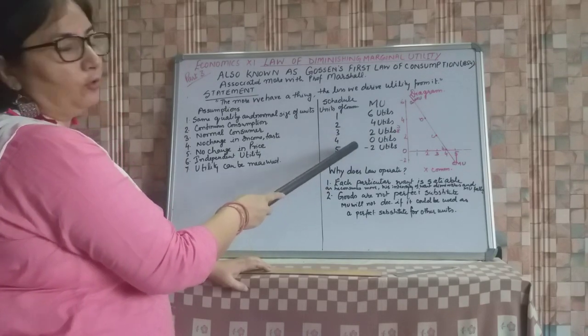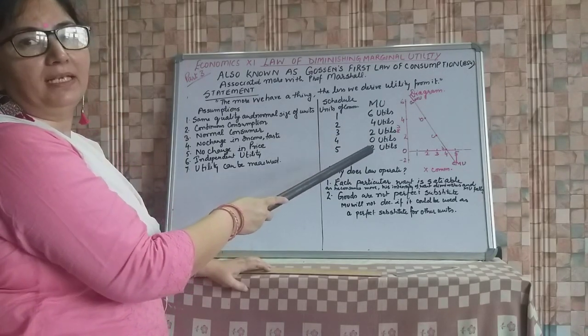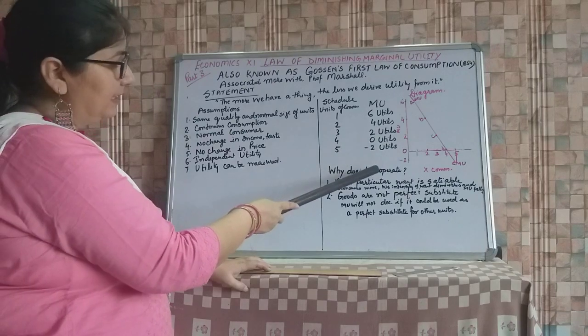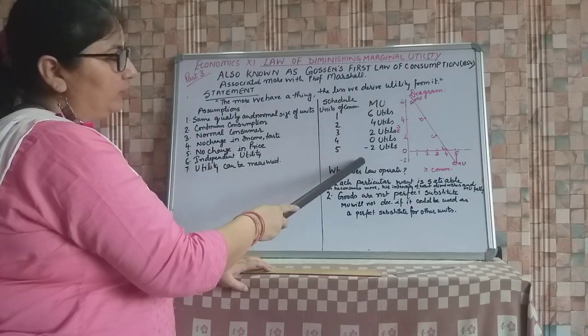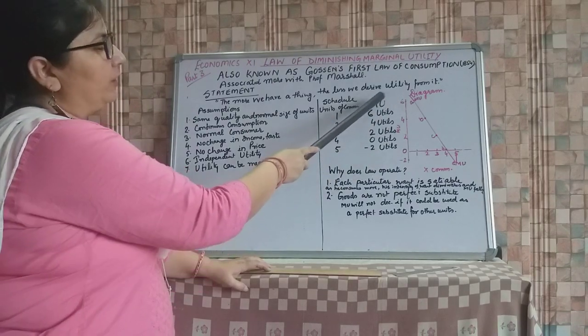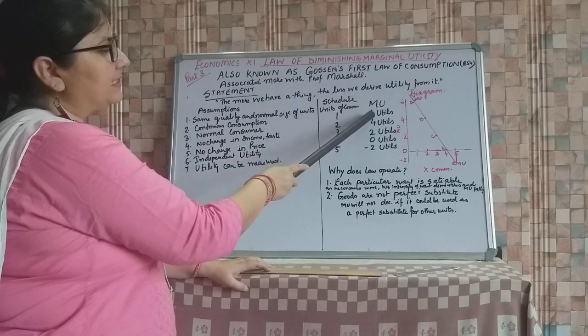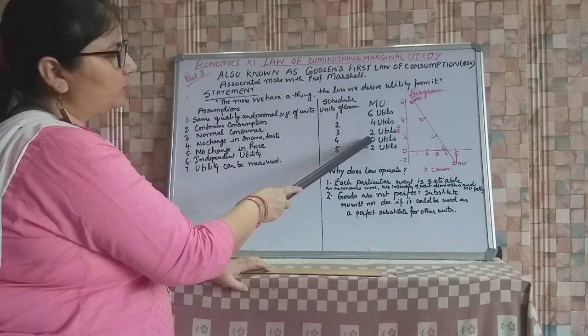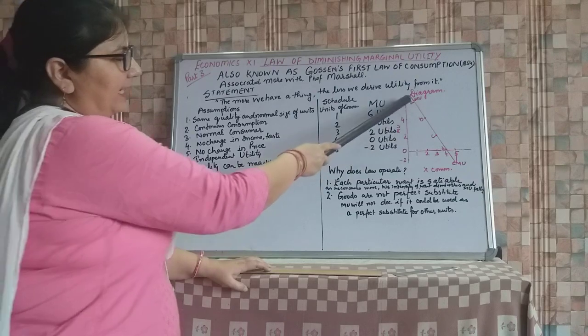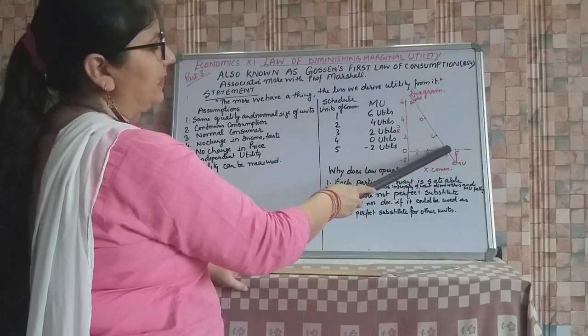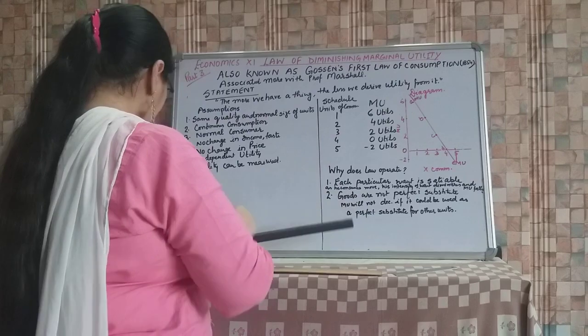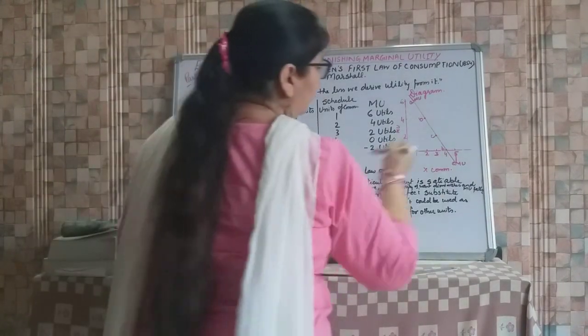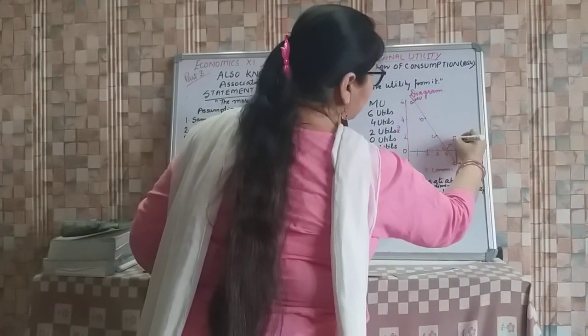In my previous video I have told you the relationship between TU and MU. Then we have calculated MU. So if we calculate TU that will be 6, 10, 12, 12 and 10 and that is already shown in the form of and here you are seeing that this is the point of satiety you can say.